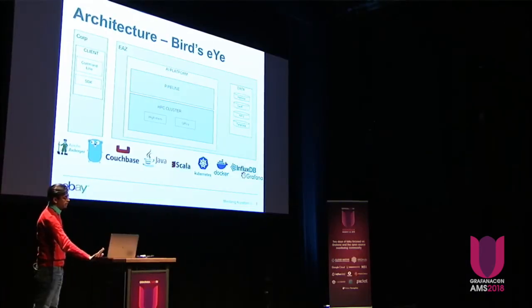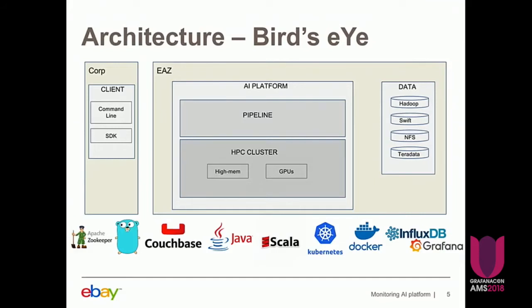This is a high-level view of our architecture. We have a high-performance compute cluster made up of high-memory and GPU nodes. The pipeline runs on the cluster and training data is stored in a series of databases — some custom implementations, some open source solutions — all within a secured environment. Users have access to submit their jobs and test locally through an SDK, and they can use the command line library — written in Golang — to manage their jobs, submit, view resources, view logs, and more.